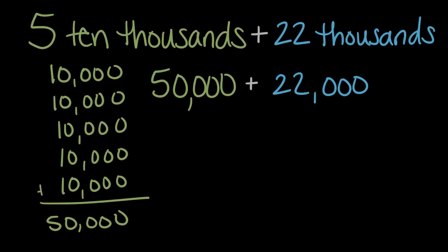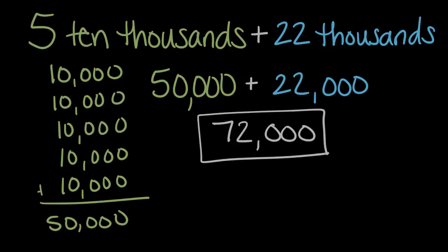And we could combine these numbers. 50,000 plus 22,000 will be a total of 72,000. So one way there, that first way we talked about is to think about what does five ten thousands look like and what do 22 thousands look like to get our numbers and then add them.